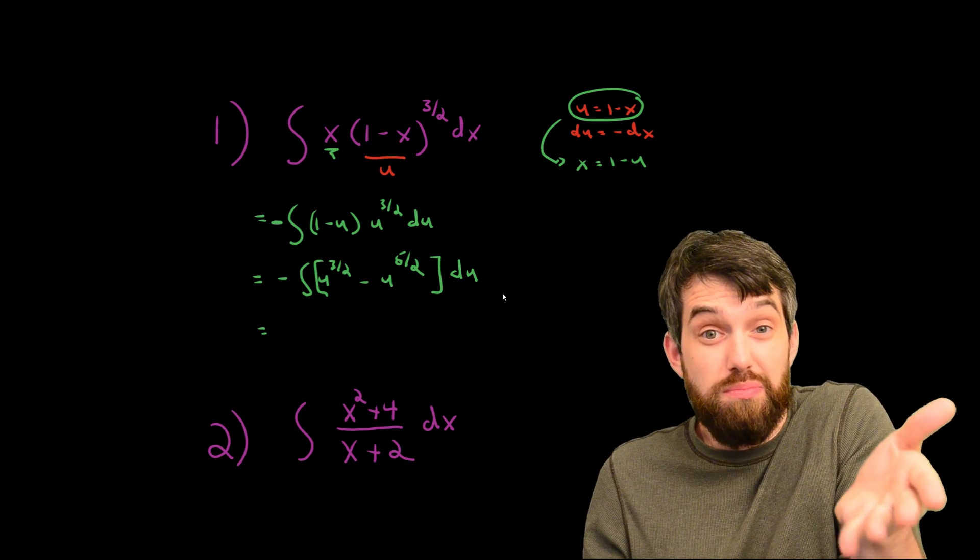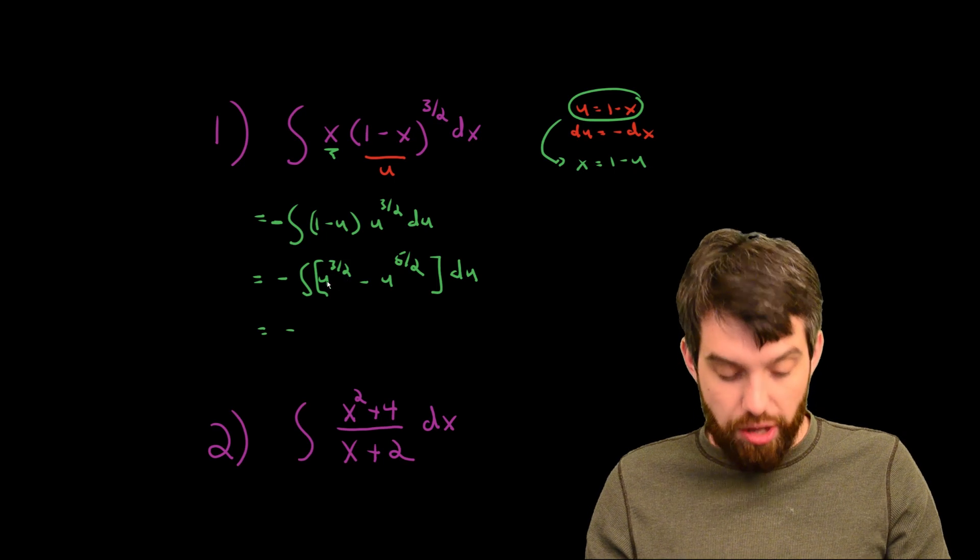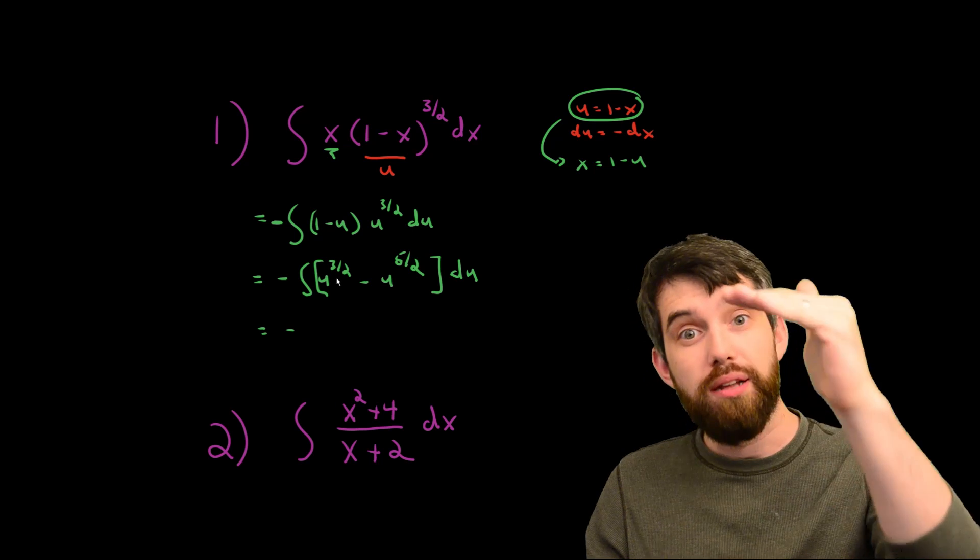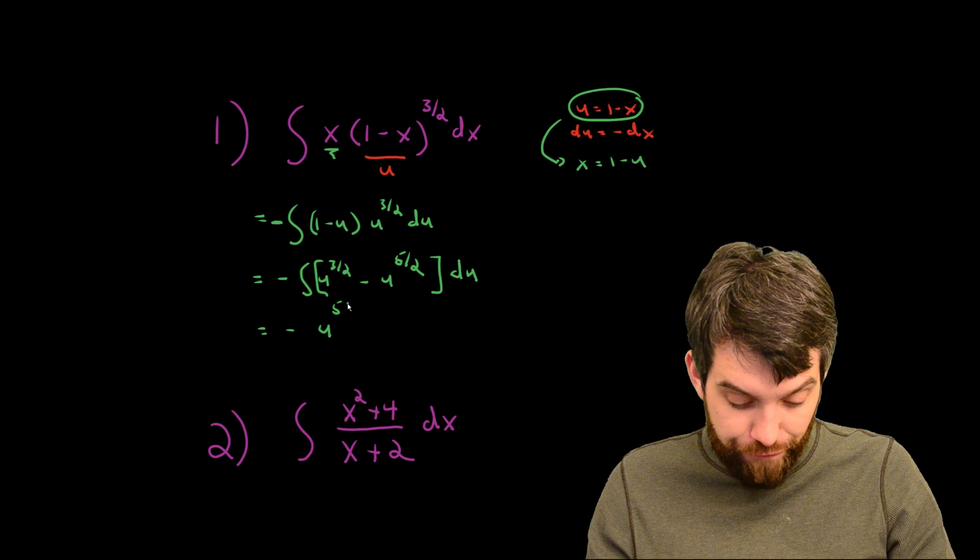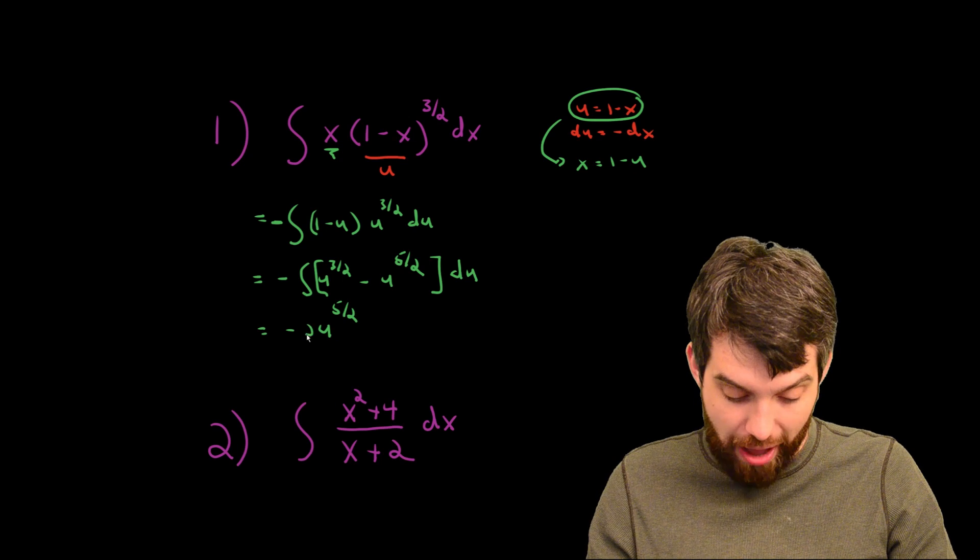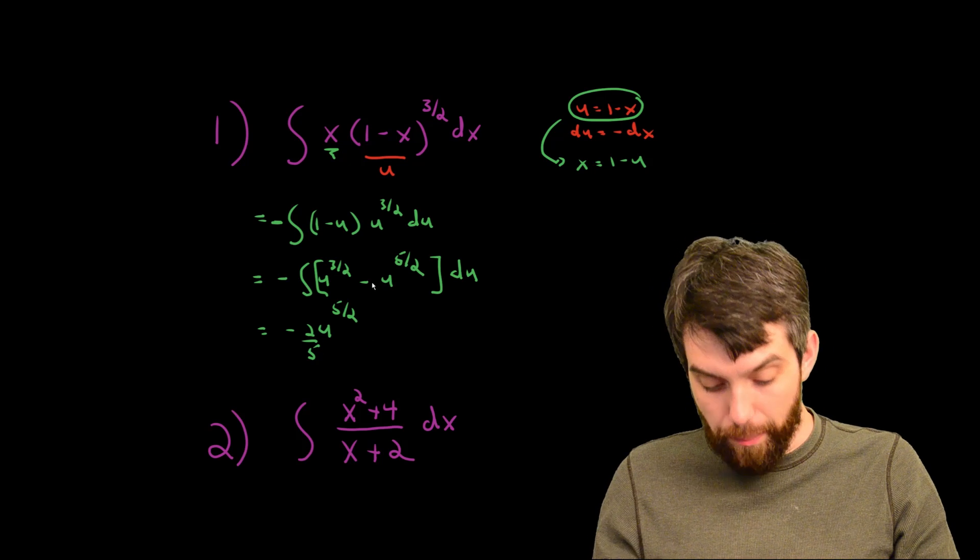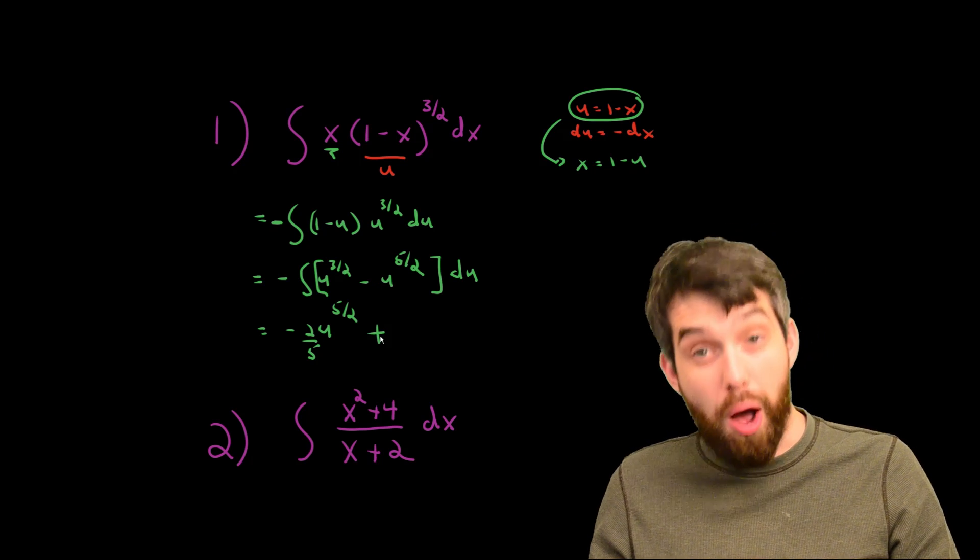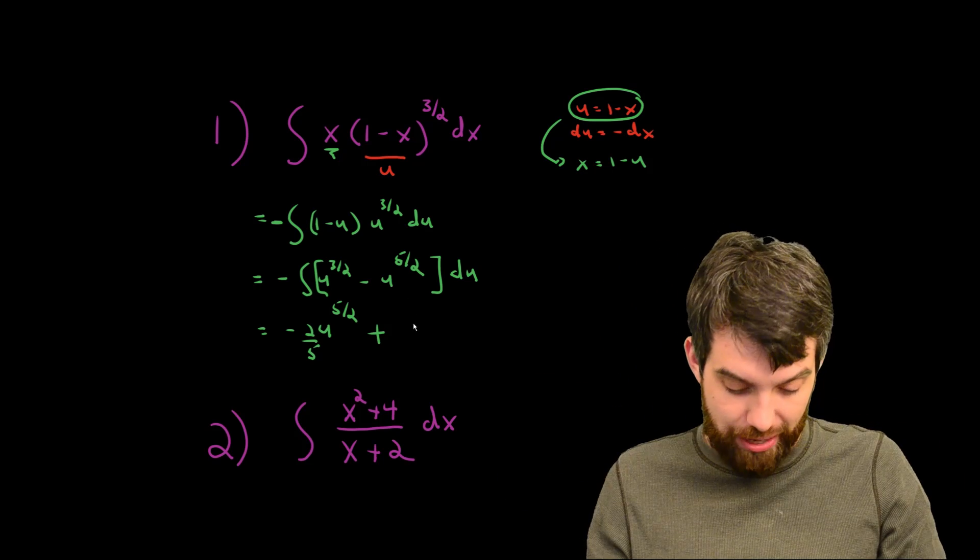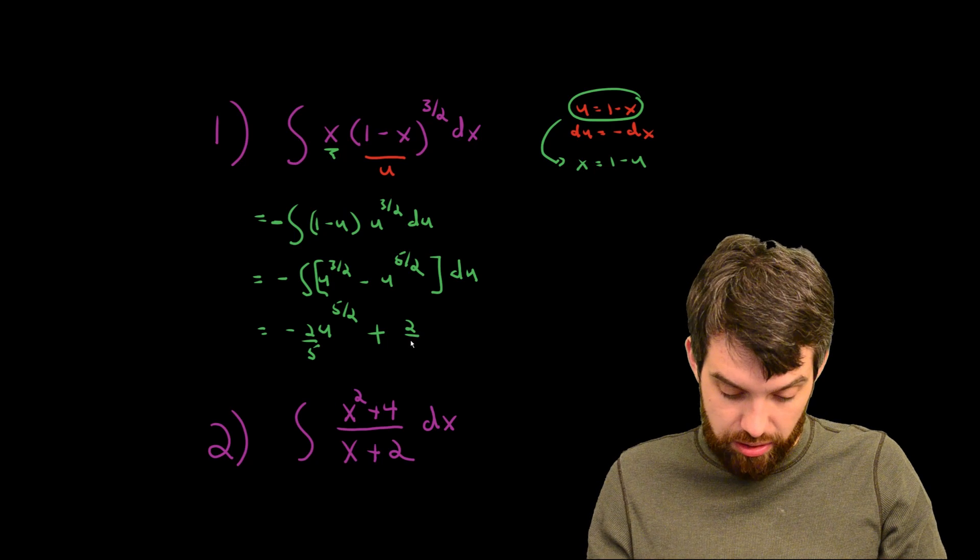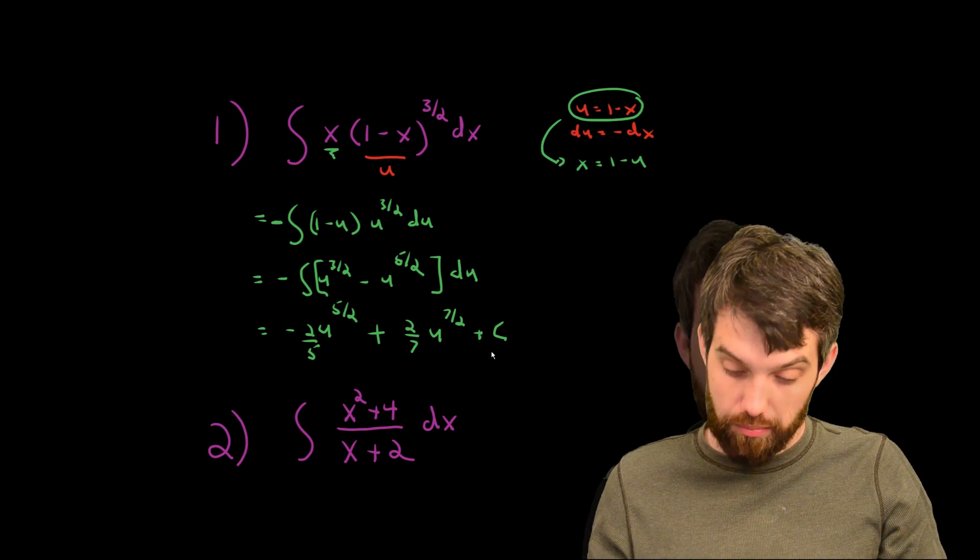These are just powers. I can use the power rule in this case. I'm going to take the minus sign. u to the n goes to u to the n plus 1 divided by n plus 1. In this case, it's going to go to u to the power of 5 halves divided out by 5 halves, or multiply by 2 fifths. And then minus minus becomes positive, u to the 5 halves goes to u to the 7 halves times 2 sevenths. So 2 sevenths times u to the 7 halves. And finally, plus c.